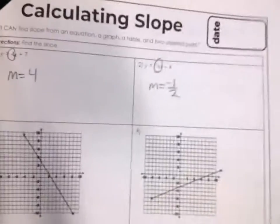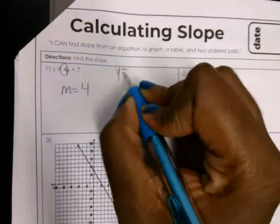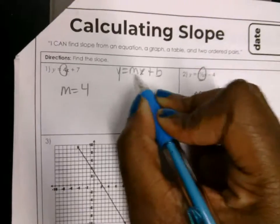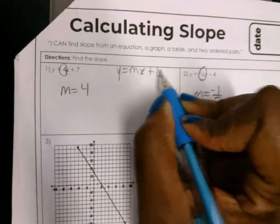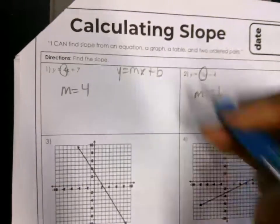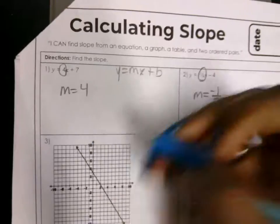All right, so when equations are written in slope intercept form, which is y equals mx plus b, where there's a number in front of x and there's a number that has no variable attached to it, x doesn't have any exponents, x is not on the bottom of a fraction. This is called the slope intercept form.